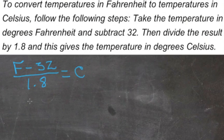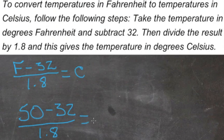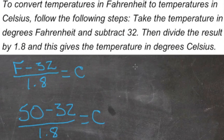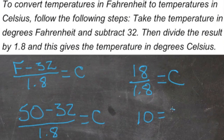Now we'll take this same equation and substitute 50 in for degrees Fahrenheit. So we have 50 minus 32, all divided by 1.8, equals degrees Celsius. We can subtract 50 minus 32 right away — that's 18. And 18 divided by 1.8 is going to be 10. So 10 equals Celsius.